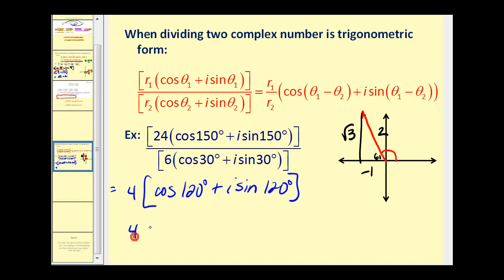So we'll have four. The cosine of 120 is negative 1/2. And the sine of 120 degrees would be √3/2. So we'd have negative two plus 2i√3.